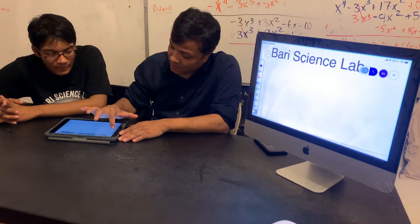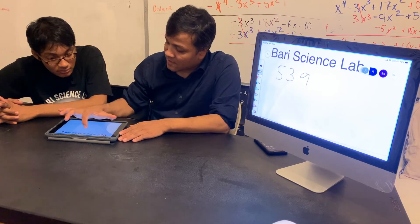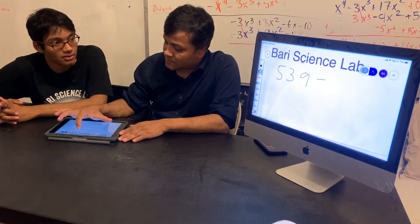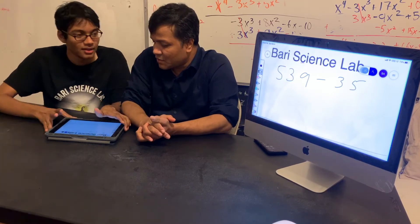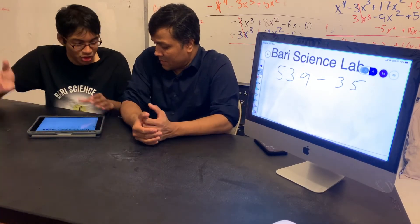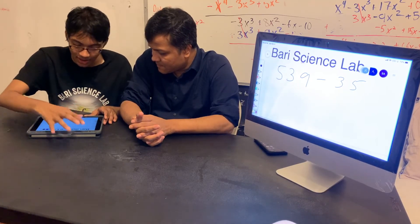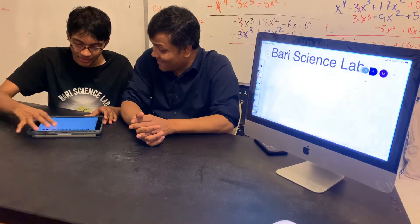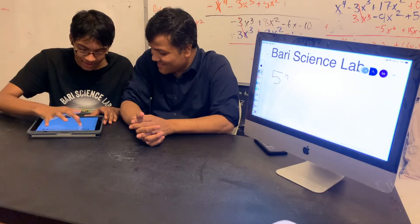Let me give you two numbers: 539 minus 35. Stack them up. Now I know the right way to stack them up — five thirty-nine minus thirty-five. Nine and five on the ones place value, three and three on the tens place value, and five is on the hundreds place value. Never forget to put zero here.